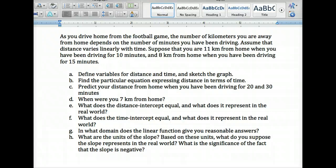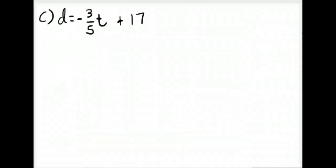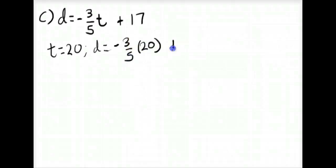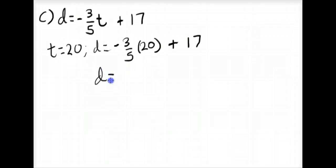For part C, we want to predict the distance from home when driving for 20 and 30 minutes. We can plug in those values of T and solve for D. Using our equation D equals negative 3 fifths T plus 17, at T equals 20 we get D equals negative 3 fifths times 20 plus 17, which is negative 12 plus 17, equaling positive 5 kilometers. At 20 minutes, they're 5 kilometers from home.